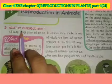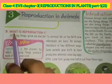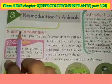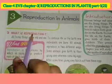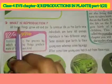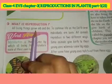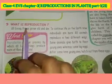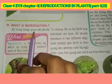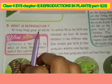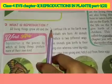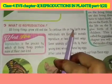So, हमारा first topic है — What is reproduction? हमसे यह पूछा गया है, what is reproduction? मतलब reproduction क्या है? All living things grow old and die. जितने भी living things होते हैं, grow होते हैं, वृद्धि करते हैं, बूढ़े होते हैं और मर जाते हैं — to continue life on the earth.